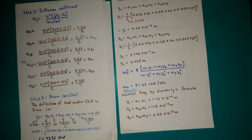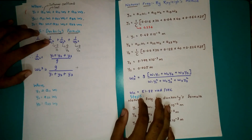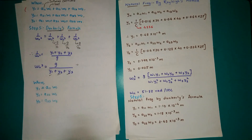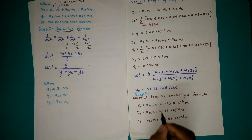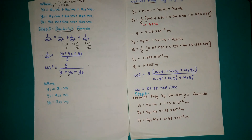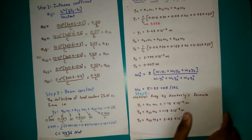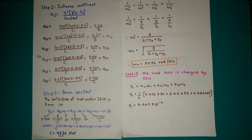Step 5 uses Dunkerley's formula: 1/omega_N squared = 1/omega_1 squared + 1/omega_2 squared + 1/omega_3 squared, where omega_i squared = G/Y_i. Y1, Y2, Y3 are the deflections under each individual load only: Y1 = A11*W1, Y2 = A22*W2, Y3 = A33*W3 — using only the diagonal influence coefficients. Putting all values in the formula, calculate to get omega_N. This concludes the first part of the question.